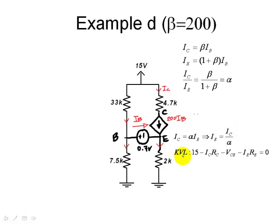That's why we wrote the KVL equation of this loop. And we said 15 volts here, minus the drop in the collector resistor, which is ICRC, minus VC, which is this voltage here, minus the voltage here, which is RE, 2 kilos times IE, equals 0. But IE is IC over alpha.